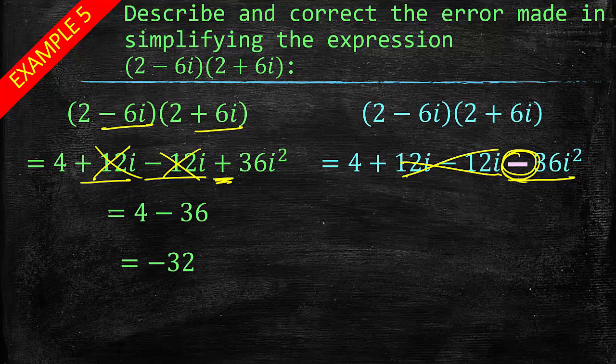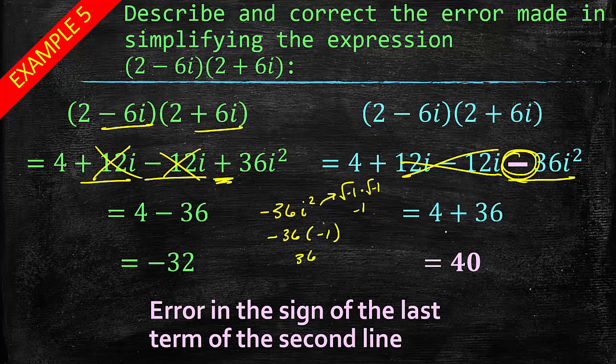So yes, this will still cancel out, but that changes the whole problem when you carry it all the way through. Because this becomes 4 plus 36, and you might be trying to figure out how. If we take negative 36 times i squared - i squared, remember, is the square root of negative 1 times the square root of negative 1, which is just negative 1. So i squared is negative 1. So negative 36 times negative 1 is a positive 36. So that gives you 40. So the error was in the sign of the last term of the second line.